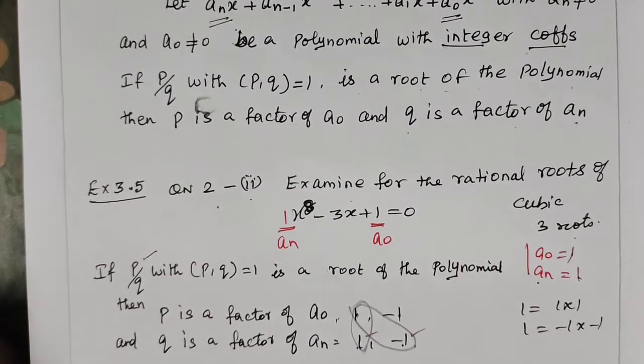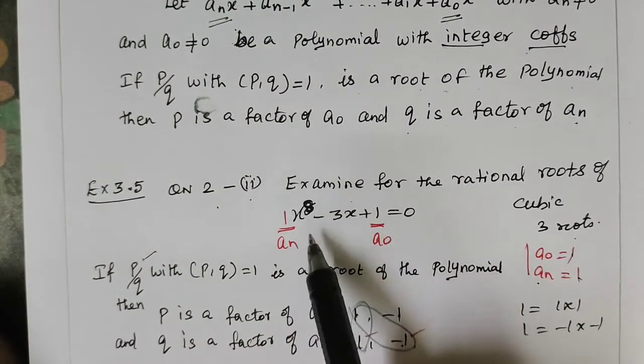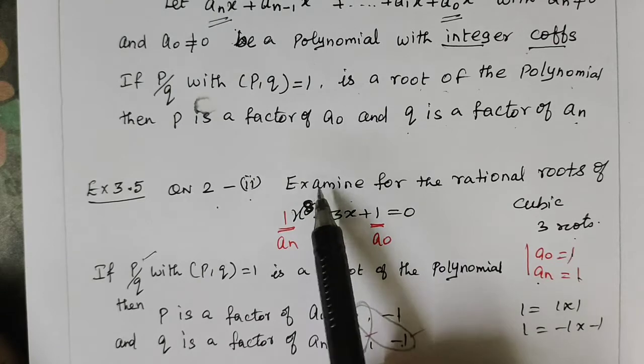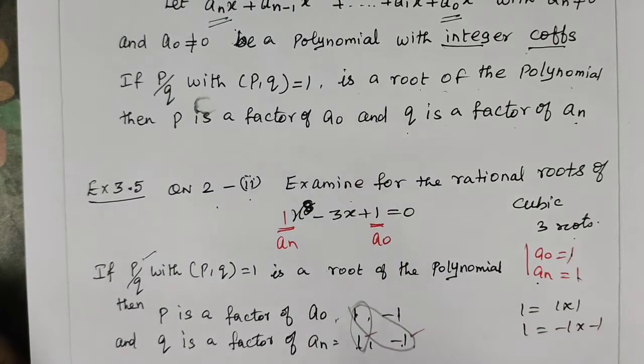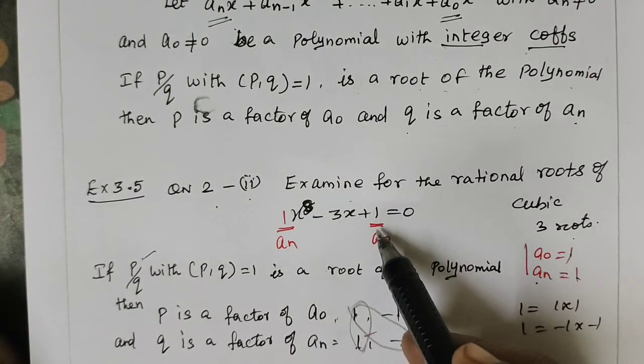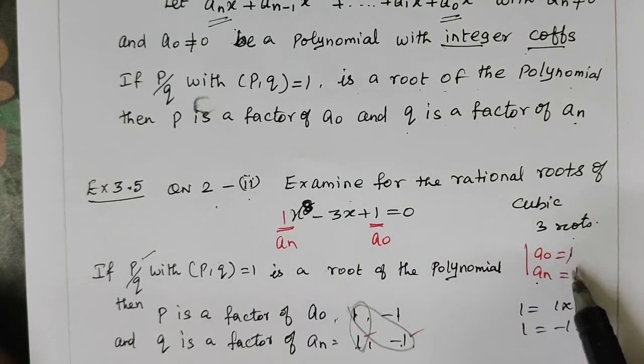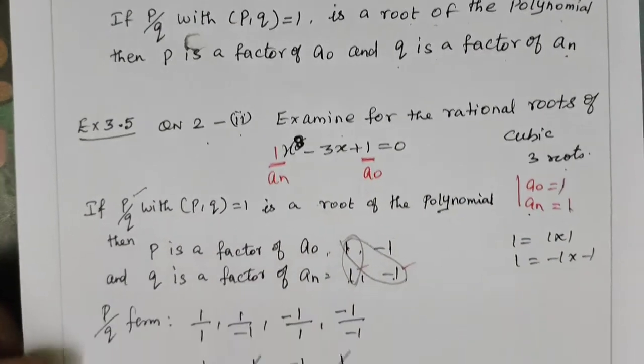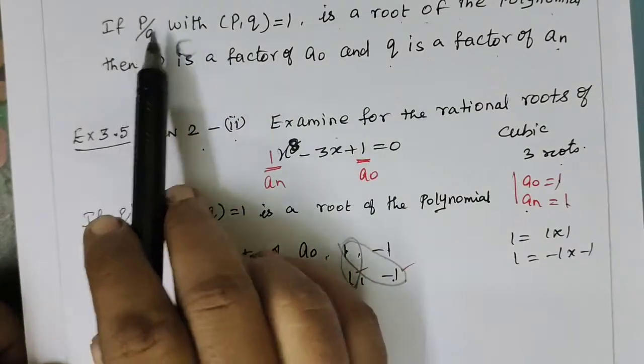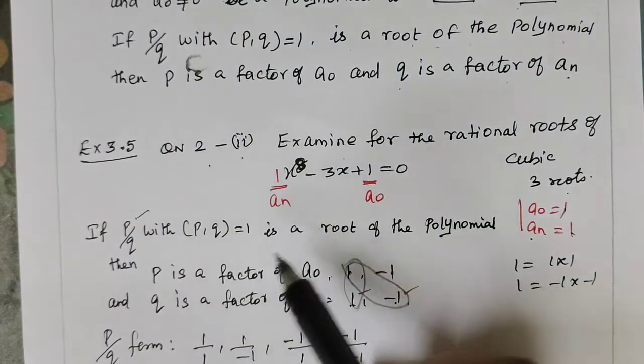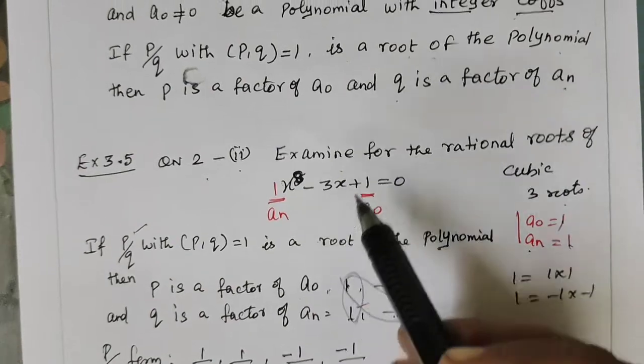We can apply this theorem. If you apply a₀, a₀ equals 1 and aₙ equals 1. This statement is p is a factor of a₀. Now 1 is a factor of 1.